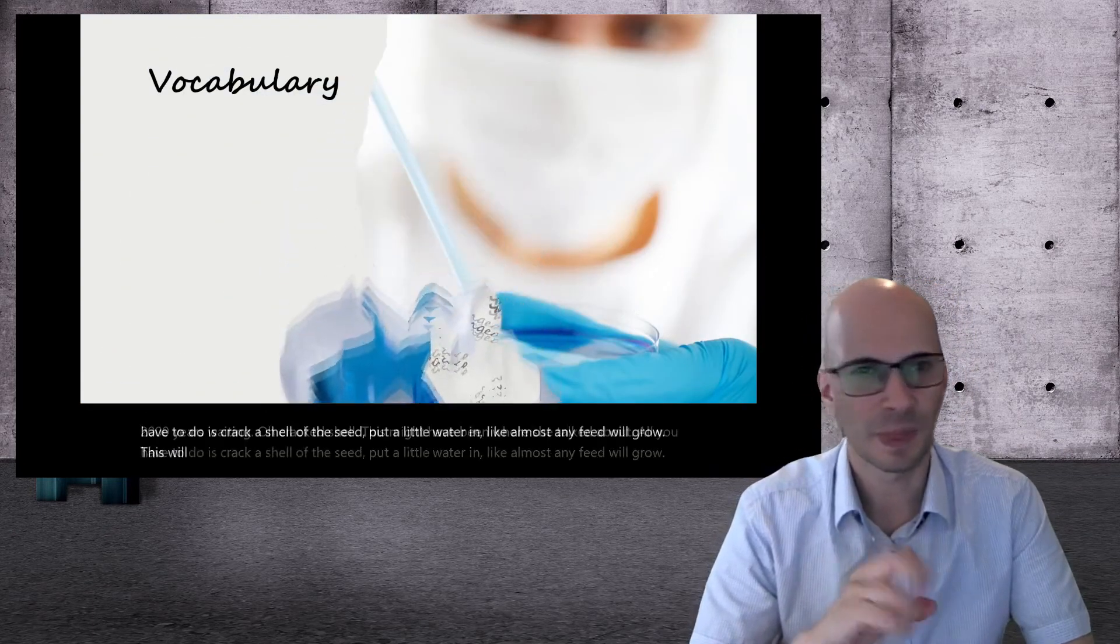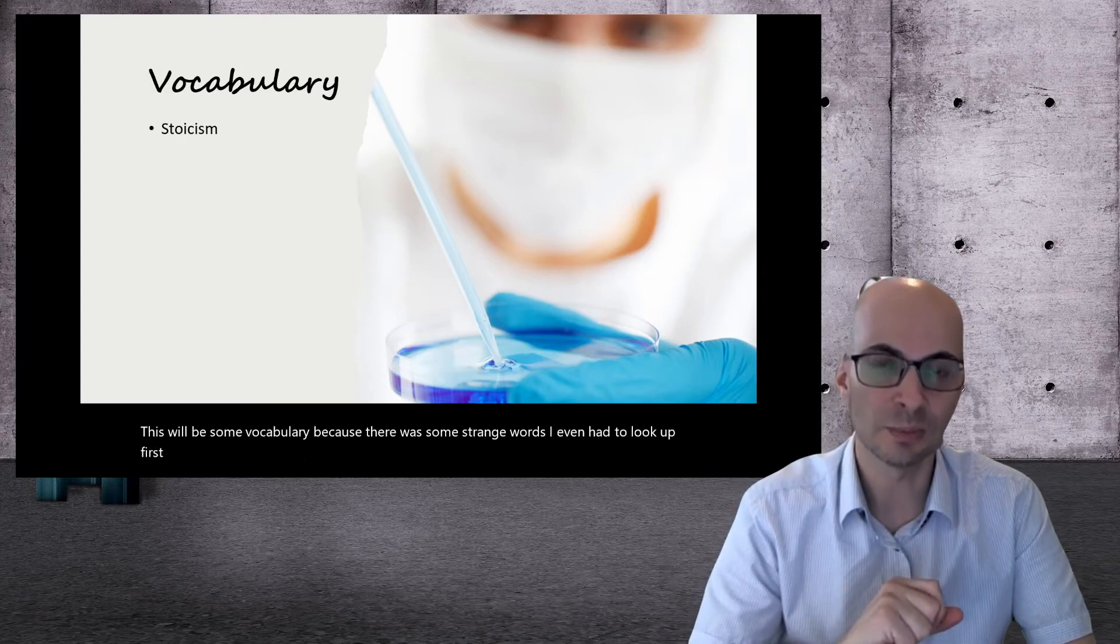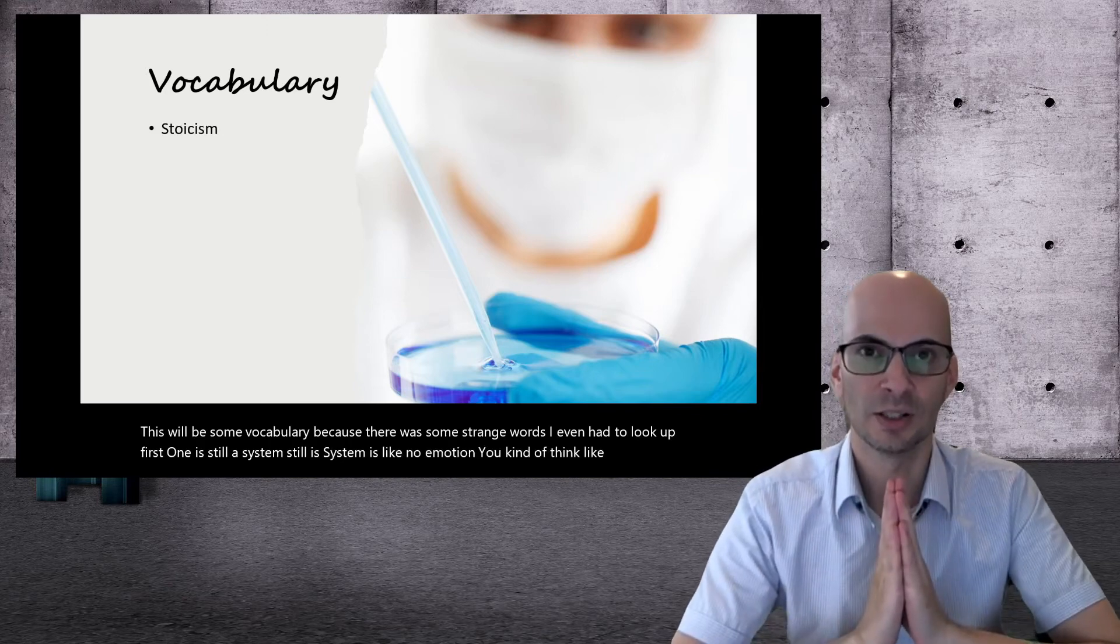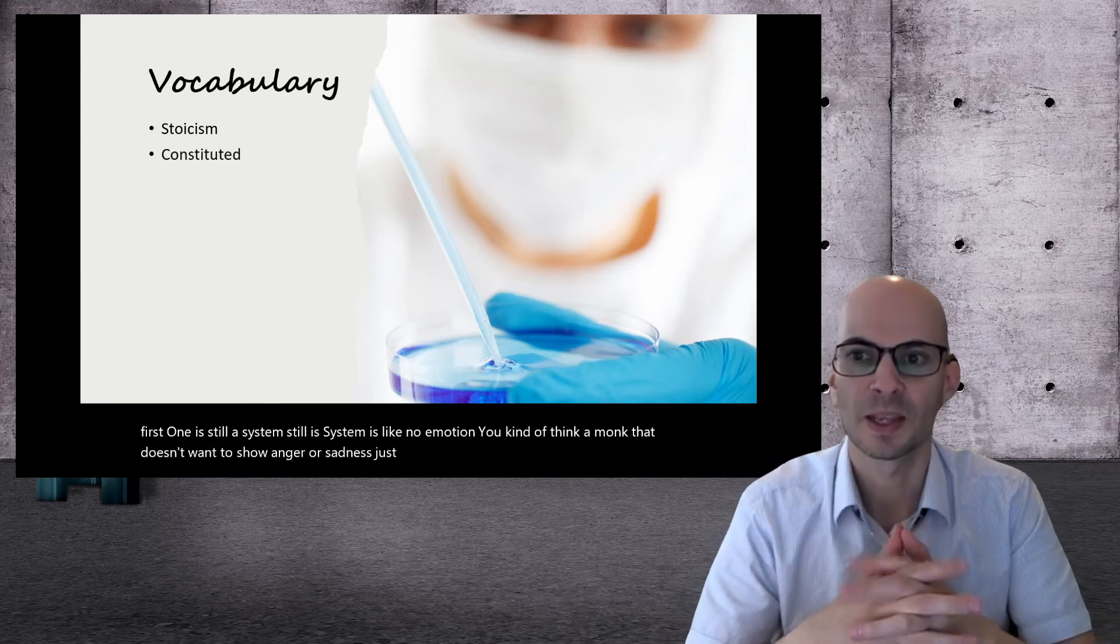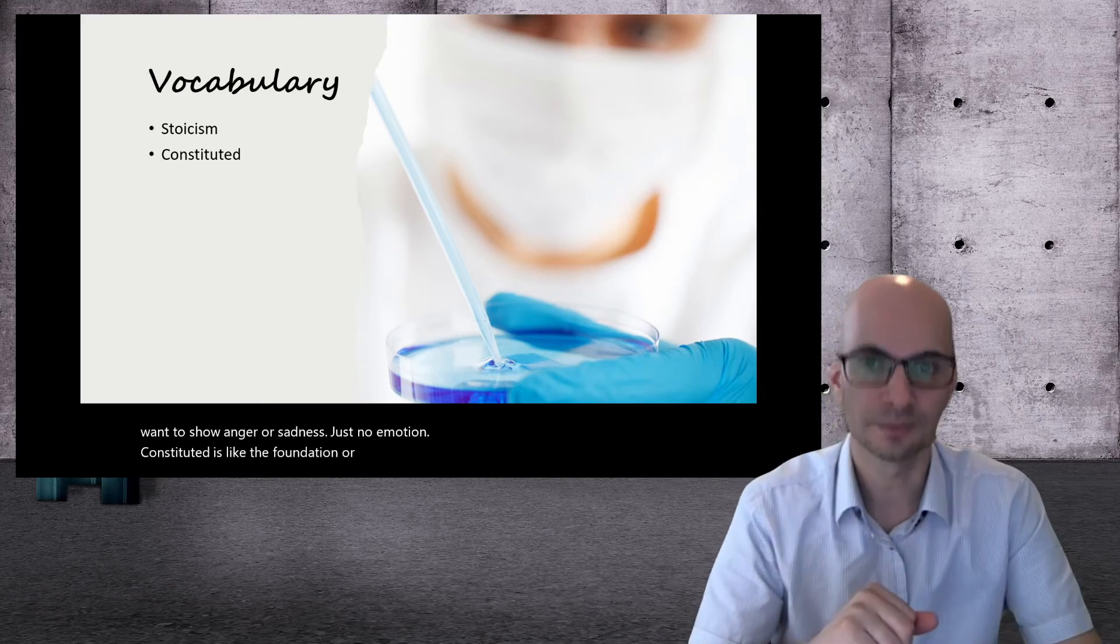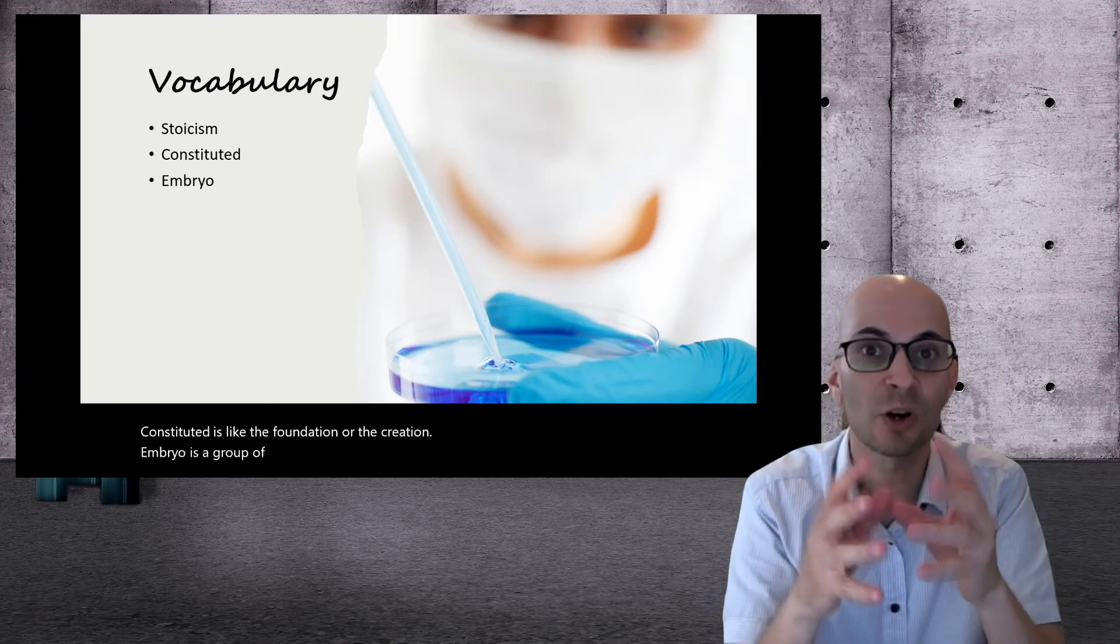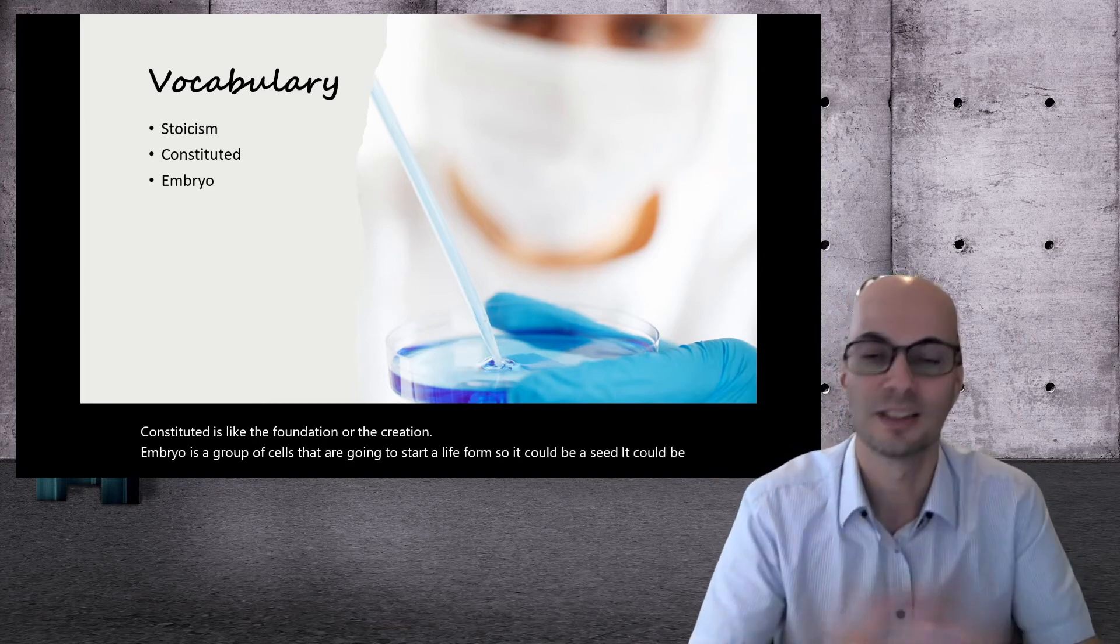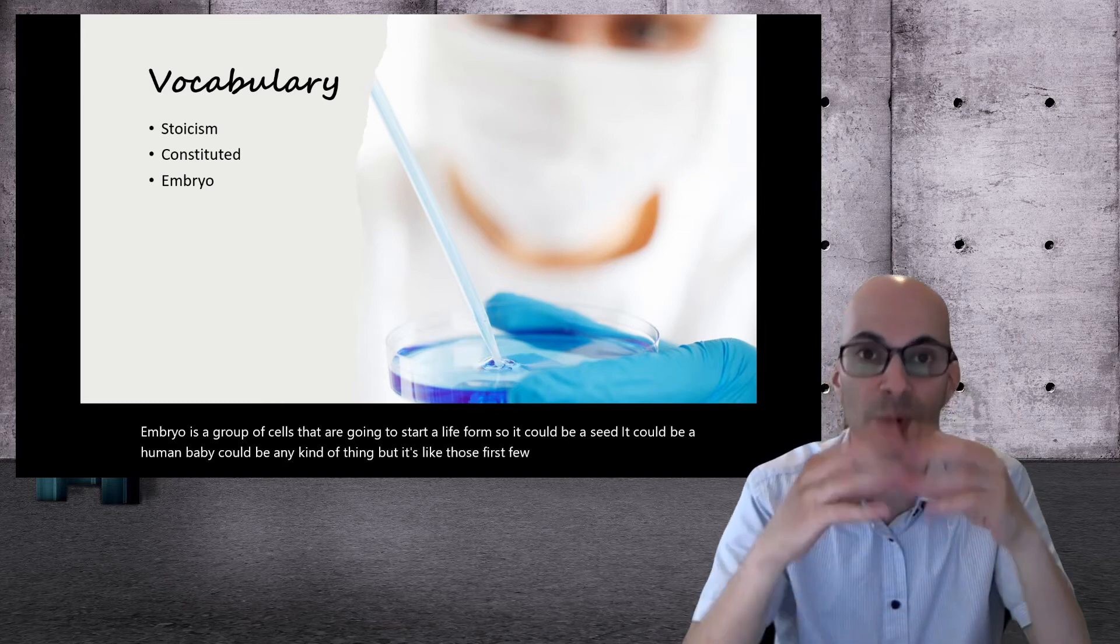Let's look at some vocabulary because there were some strange words I even had to look up. First one is stoicism. Stoicism is like no emotion. You kind of think like a monk that doesn't want to show anger or sadness, just no emotion. Constituted is like the foundation or the creation. Embryo is a group of cells that are going to start a life form. So it could be a seed, it could be a human baby, it could be any kind of thing, but it's like those first few cells together about ready to grow into something.